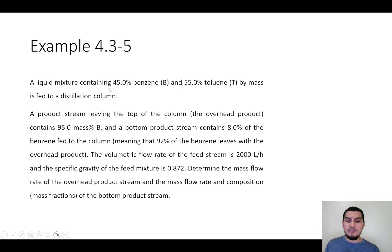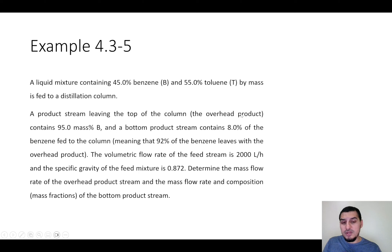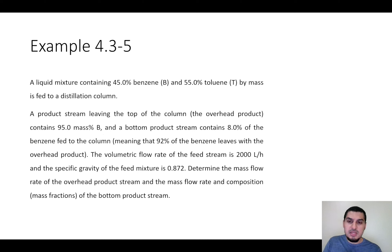We will apply this now on another example. This is a good example because we will have some confusing data. We have a mixture consisting of 45% benzene and 55% toluene — these are mass fractions: 0.45 benzene and 0.55 toluene. This mixture is fed to a distillation column. The product leaving the top of the column — the overhead — contains 95 mass percent benzene. This information is clear and straightforward.